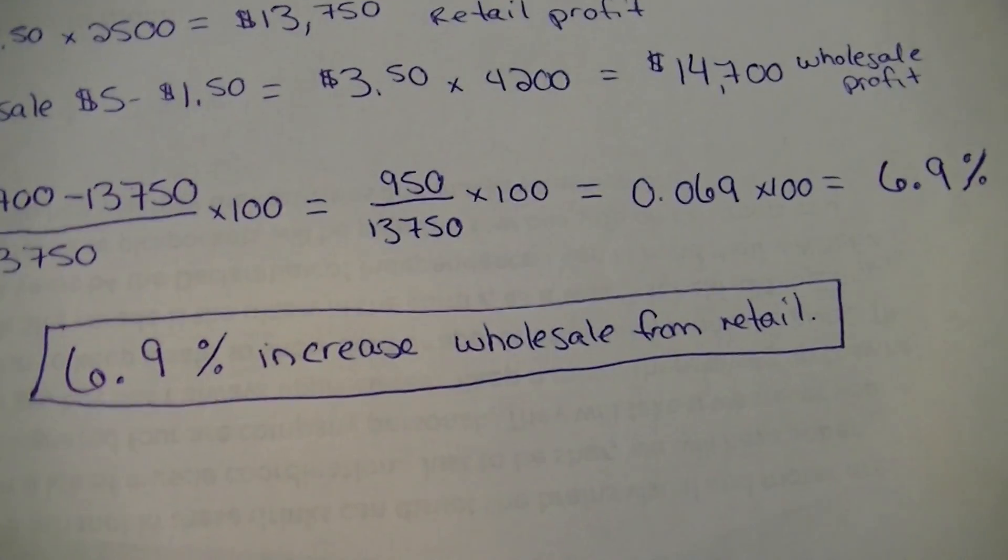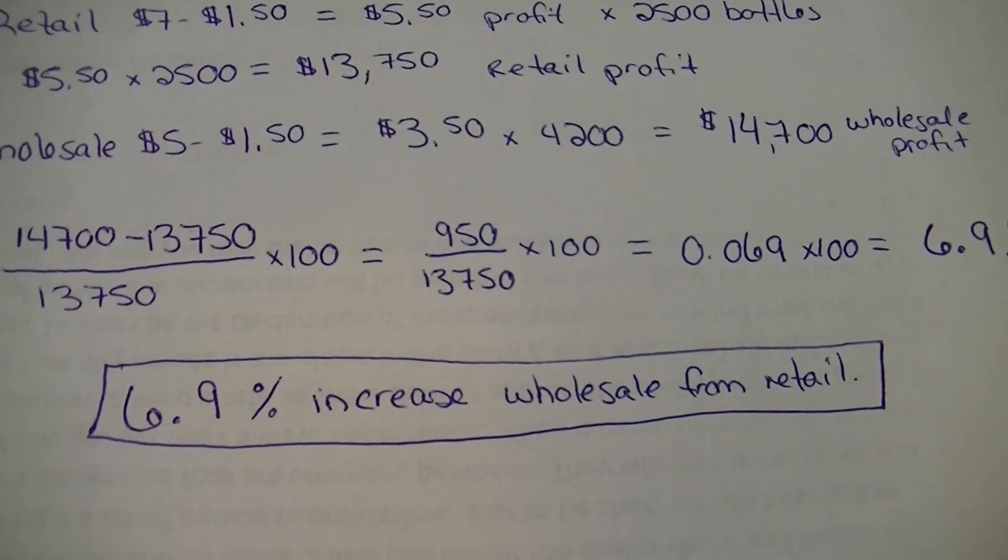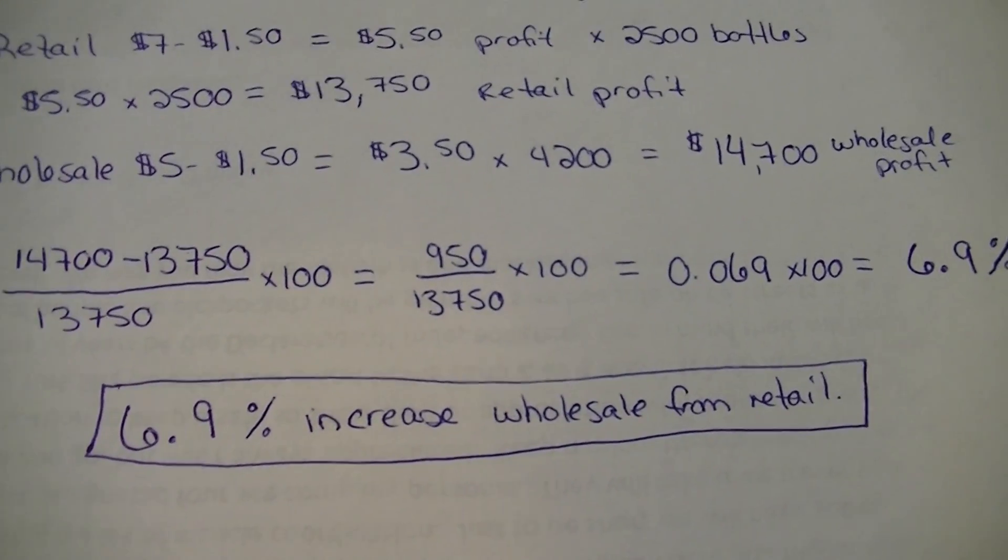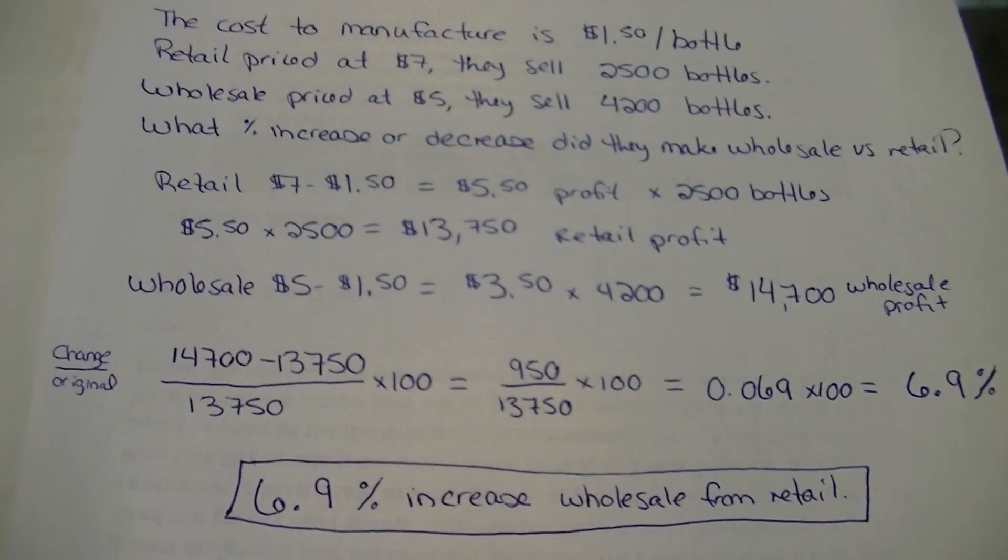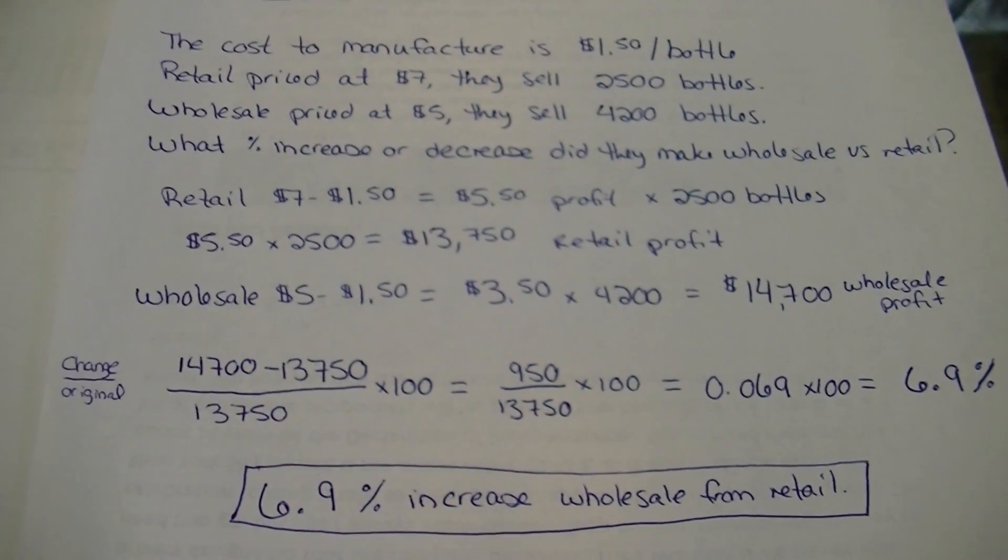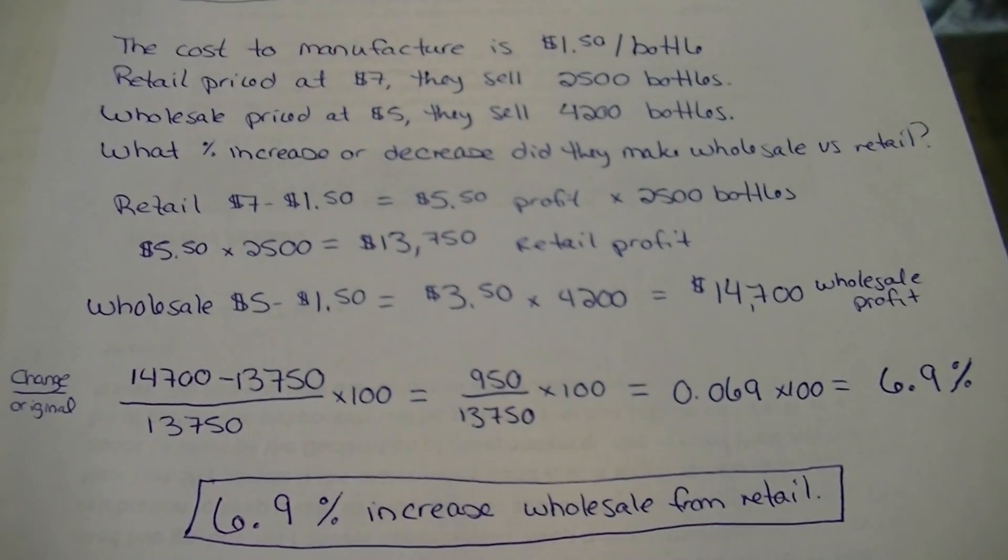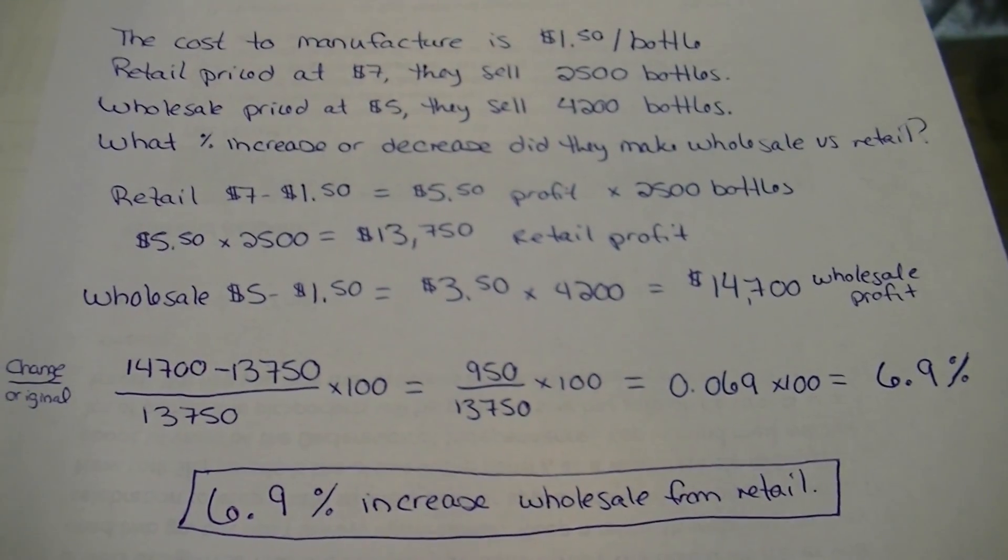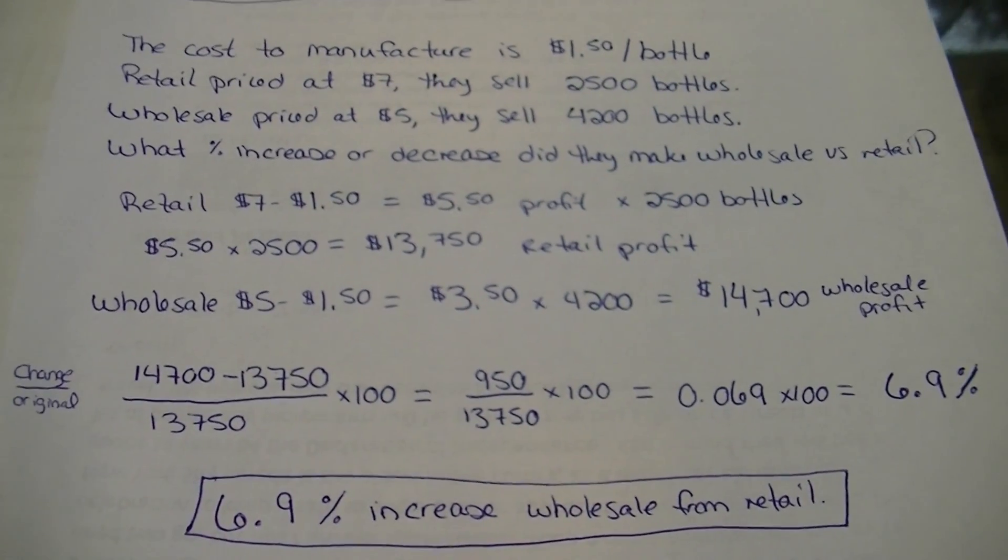So when we move two decimal places, we see that it goes to 6.9%. So we're talking a 6.9% increase from wholesale, or I'm sorry, retail compared to wholesale. So that is a multi-step problem. And hopefully y'all feel pretty confident in being able to walk through something similar yourselves. Keep up the good work, y'all. We'll talk to you soon.